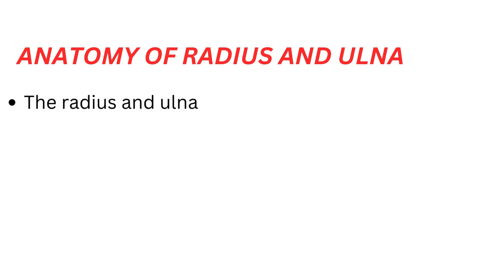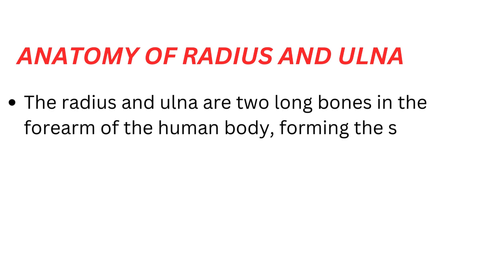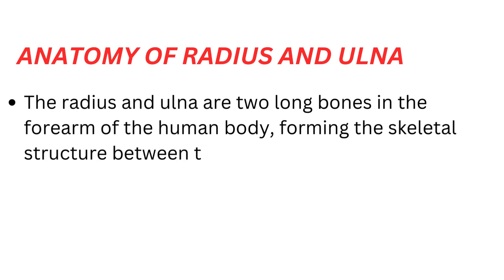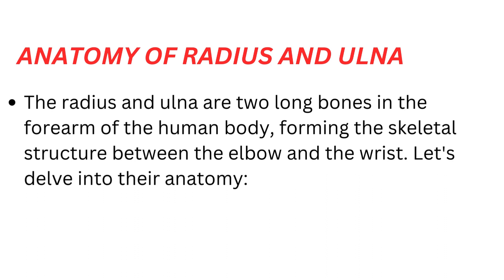The radius and ulna are two long bones in the forearm of the human body, forming the skeletal structure between the elbow and the wrist. Let's delve into their anatomy.